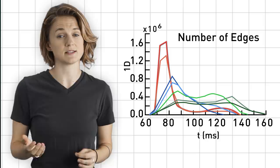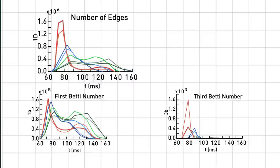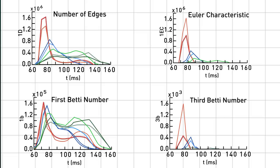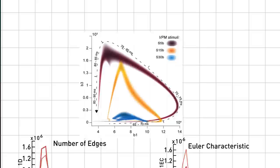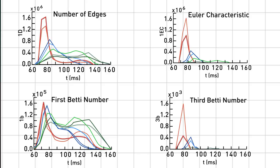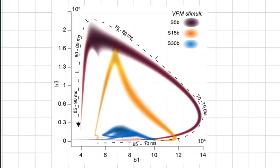In the graph representing connections between neurons, this is the number of edges as time passes. Viewing this graph as a simplicial complex, these are the first and third Betty numbers and the Euler characteristic. They grow and then shrink. This happened with several different models and different stimuli. Here's another way to look at it. Each patch of this swoosh is a little time slice. Shortly after the stimulus, it starts here and builds up, and then collapses back down.